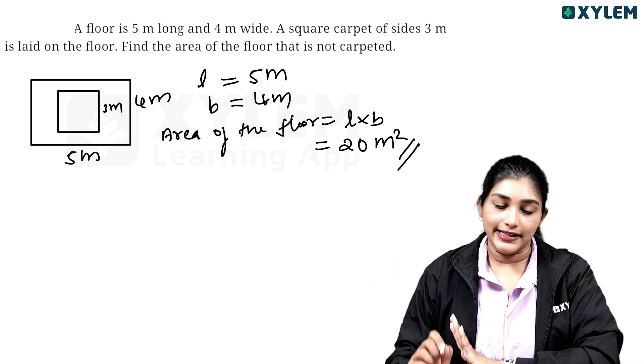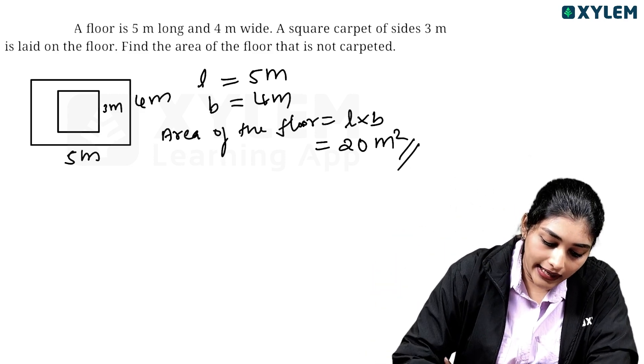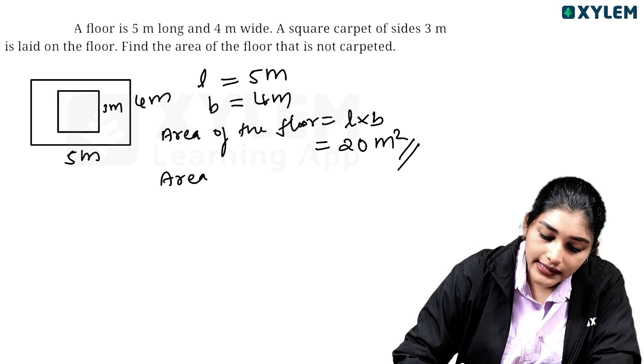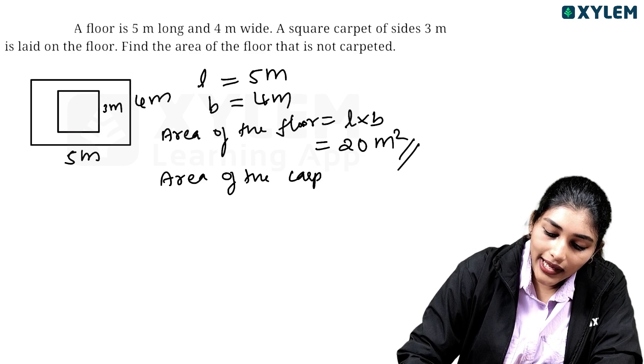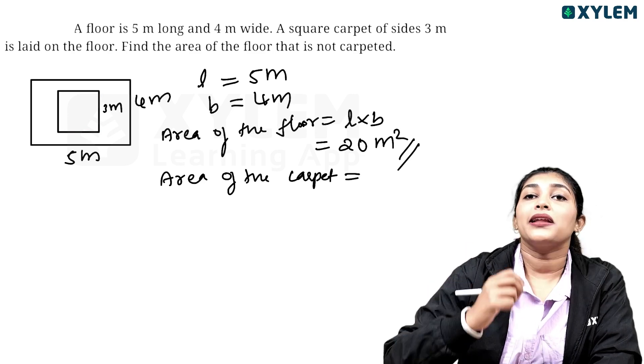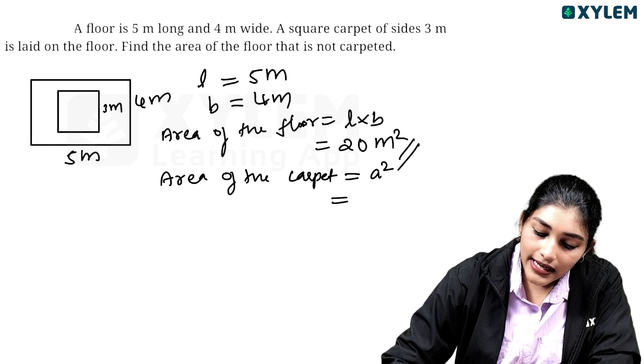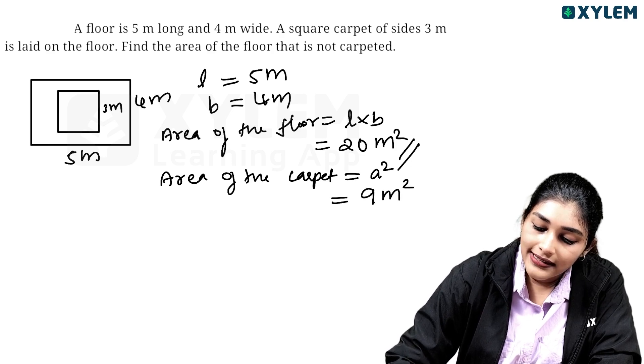Floor in the area and the square carpet is square. Square carpet is one side, area of the carpet and the square carpet is 3 meter. What do you say? Yes, dears.